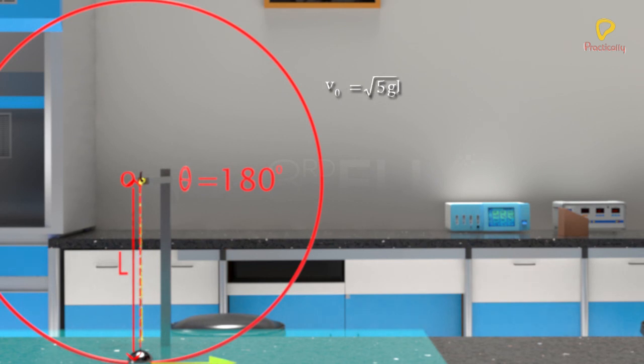Hence, minimum velocity the bob should be given at the lowest point A so that it completes a full circle is root over 5 gl.